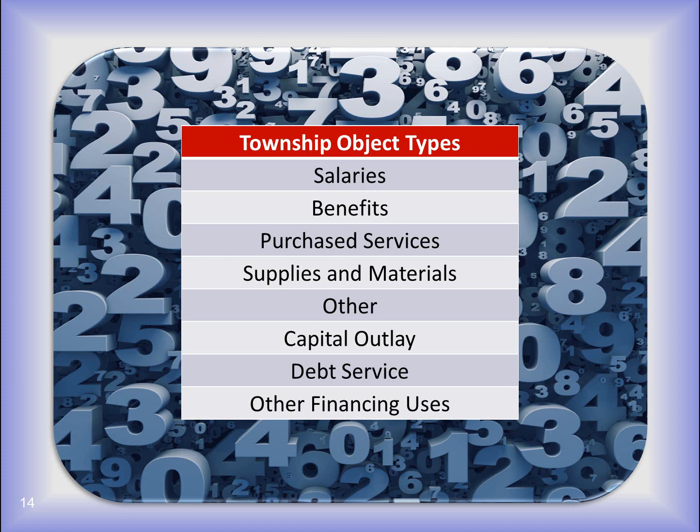This would be rare. Capital outlay object codes should always be paired with a capital outlay program code, and they're only used for capital outlay. Debt service object codes are always used to pay debt payments. Other financing uses groups a range of items together that are not part of the normal operating expenses, such as the receipt of loan money, inter-fund transfers, and inter-fund advances.